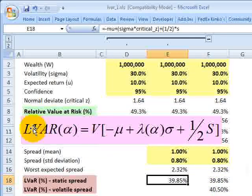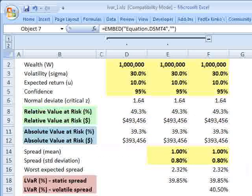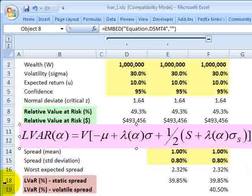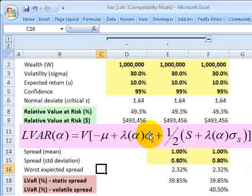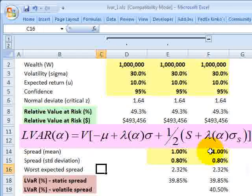And so the other thing we can do is if the spread itself is volatile, we can incorporate that uncertainty by using the VAR concept itself. So here's the full formula. It's not nearly as bad as it looks. We've still got the absolute VAR right here. And now we're increasing the VAR by the liquidity. And we're using one-half, but not of the spread, but rather the spread plus the normal deviate times the volatility of the spread.